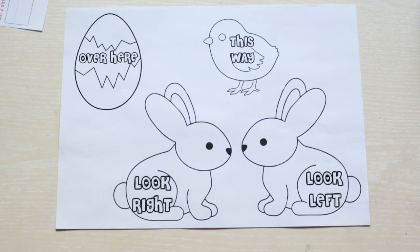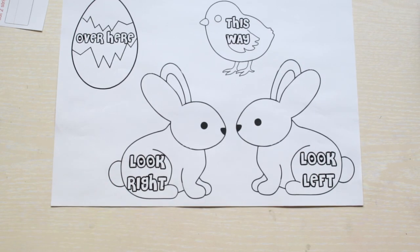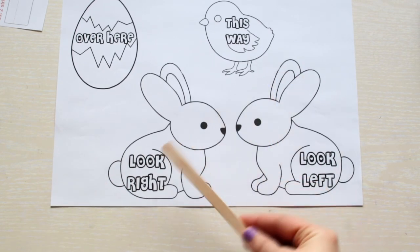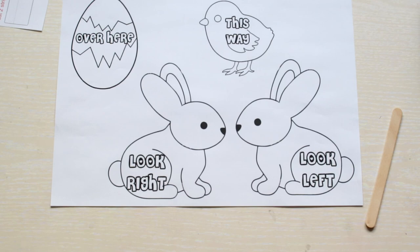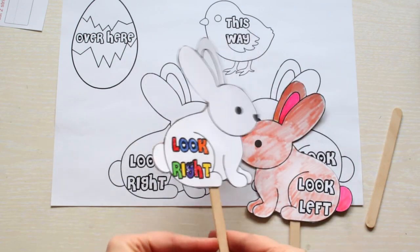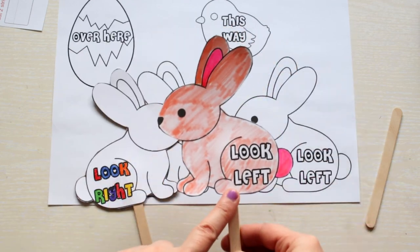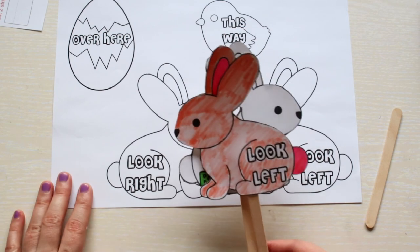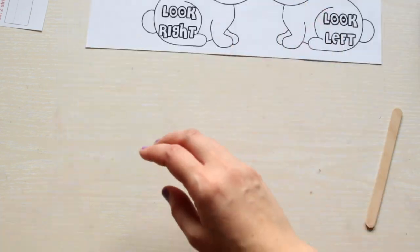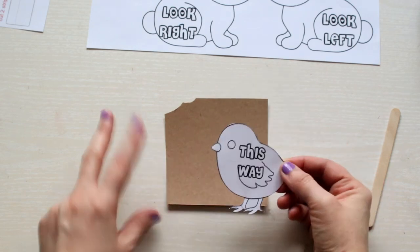If you print the second page of my template you can create clues for the egg hunt and place them around the house or in the garden. You can either leave them white and color the letters or you can color the characters and leave the letters white. Like in this quick example I made earlier. I'll quickly show you how I made these clues.